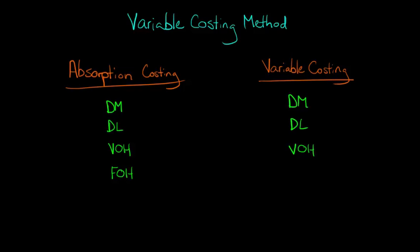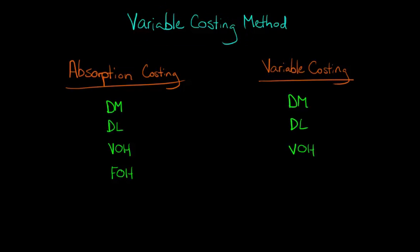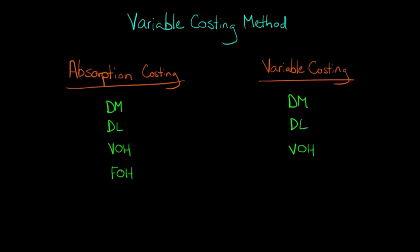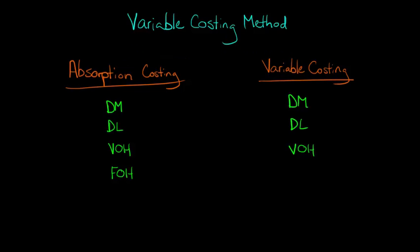In this video, we're going to talk about variable costing. In our last video, when we discussed absorption costing, we talked about how manufacturing firms basically have two different ways of calculating product costs. We have the absorption costing method and the variable costing method, and now we're going to drill down and focus on variable costing.